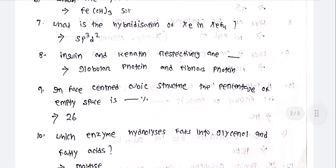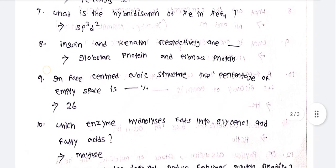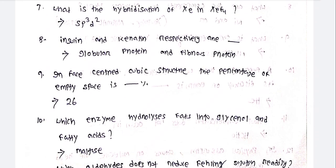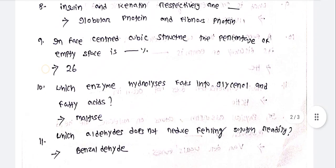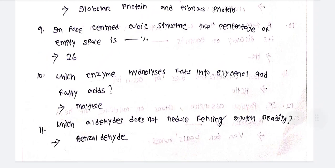Insulin and keratin respectively are fibrous and globular proteins. In a face-centred cubic structure, the percentage of empty space is 26%. The enzyme that hydrolyzes fats into glycerol and fatty acids is lipase.